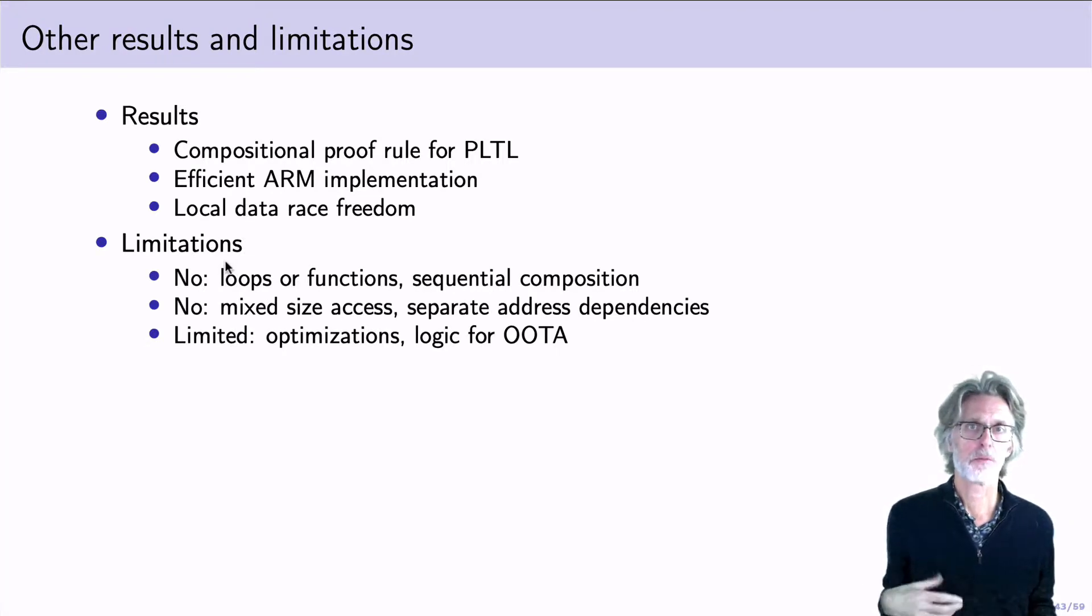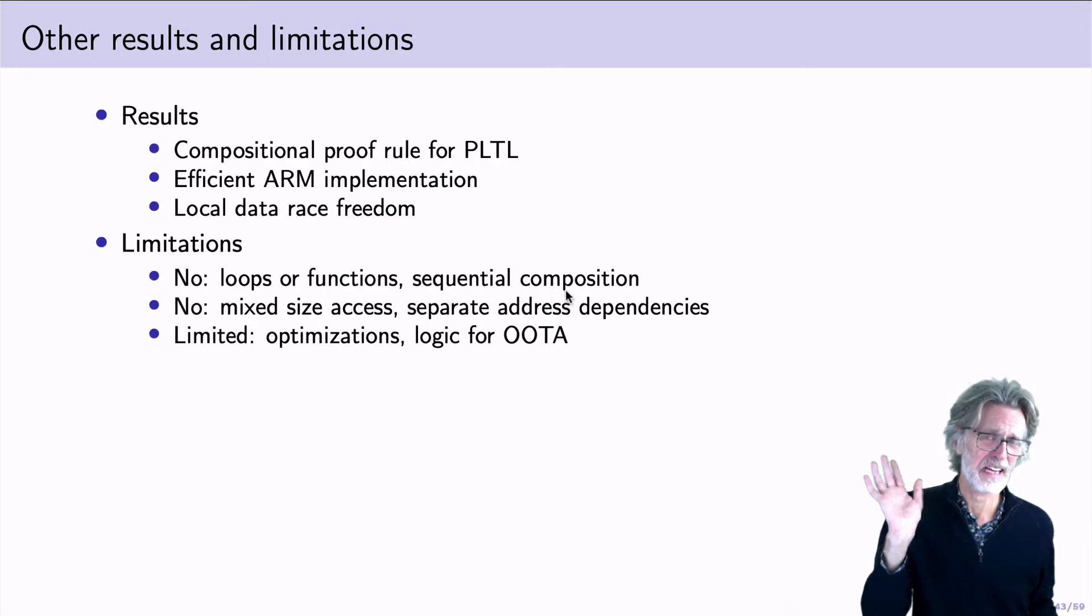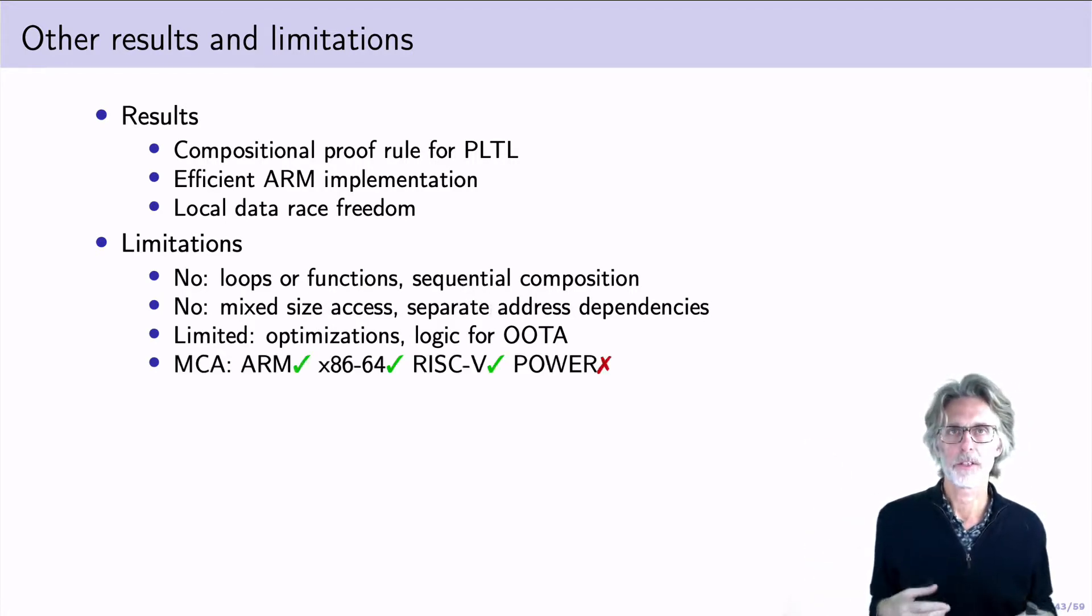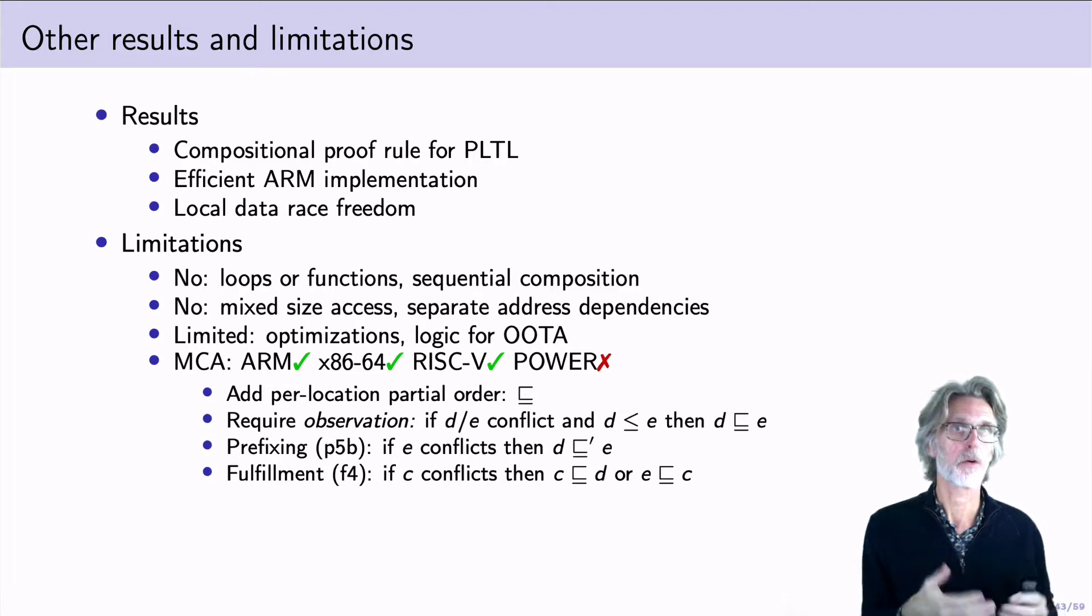There are several limitations to our study. We haven't looked at loops or sequential composition. We haven't studied mixed size access or really validated Java's final field semantics, which may require address dependencies. We've been limited in our treatment of optimizations and the compositional proof rules. But the main objection I've heard to our paper is that we're not handling non-MCA architectures, such as power. Having only one order does simplify things for a programmer, and it also simplifies our proof of local race freedom. But it's not completely fundamental to our model. We expect that by adding in a second order, one could possibly compile to MCA efficiently while maintaining the good properties of our model.